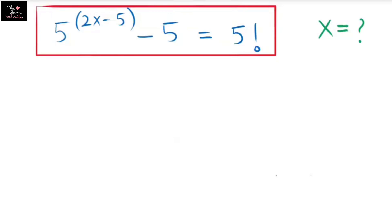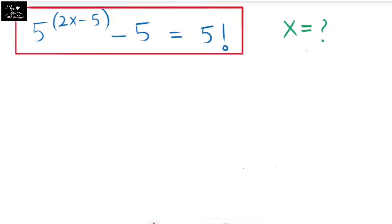First you need to know how to write the factorial for any number. Factorials are the multiplication of one number with the number below that number, or we can say the product of all the integers below it equal to a given positive integer. The general formula for factorial is: n factorial equals n times (n minus 1) factorial.